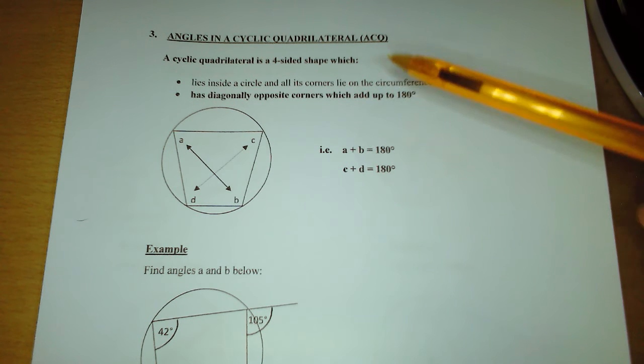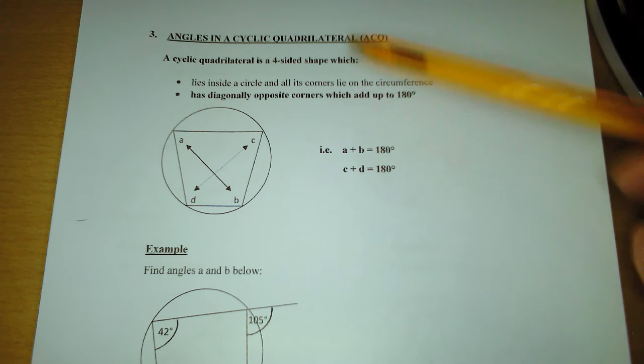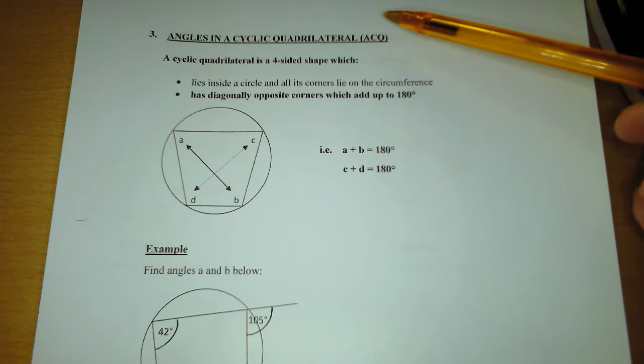We're now going to look at circle theorem number three, and it is called angles in a cyclic quadrilateral, ACQ for short.